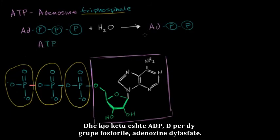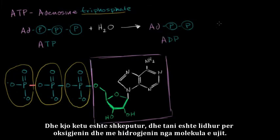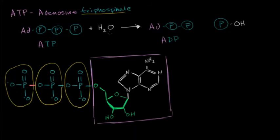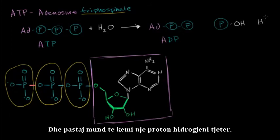And this right over here is ADP, di for 2, two phosphoryl groups, adenosine diphosphate. And then this one got plucked off. This one gets plucked off, or it pops off. And it's now bonded to the oxygen and one of the hydrogens from the water molecule. And then you could have another hydrogen proton.